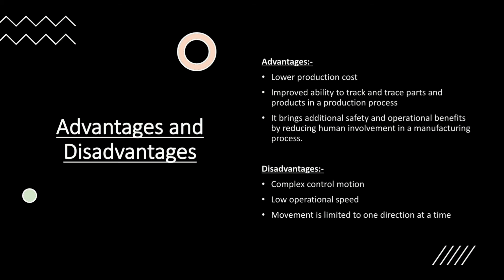Speaking about the disadvantages of machine vision systems, they have complex control motion, low operational speed, and movement is limited to one direction at a time.